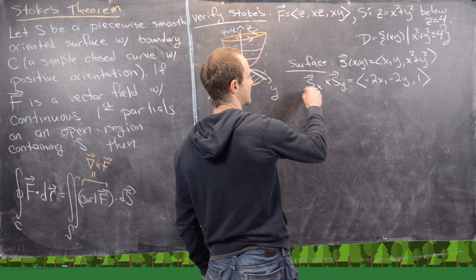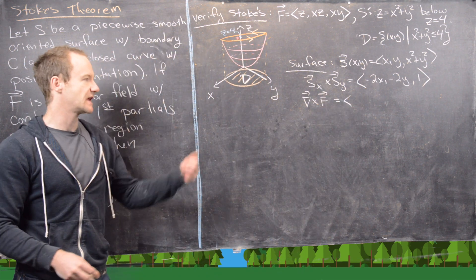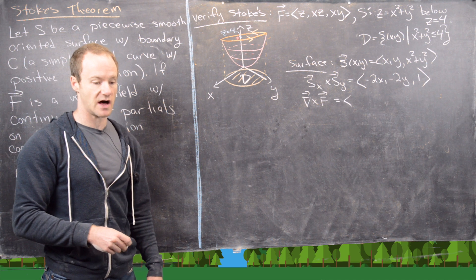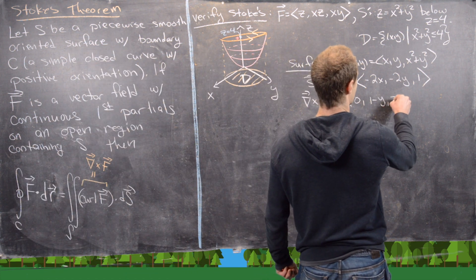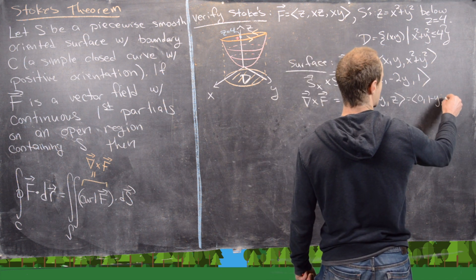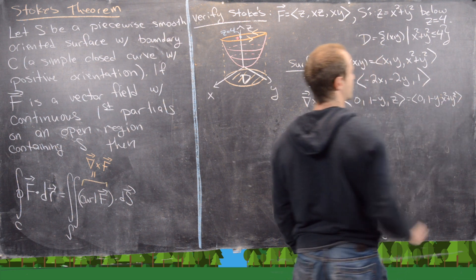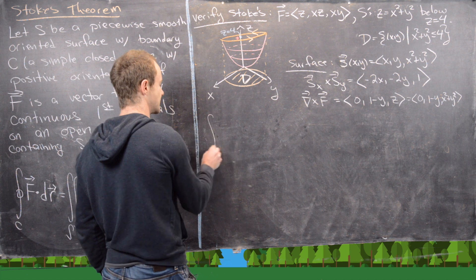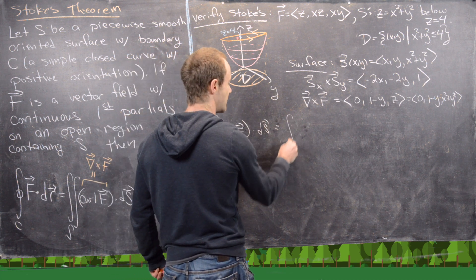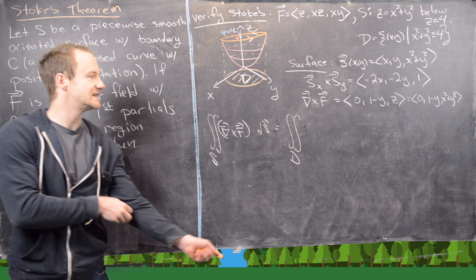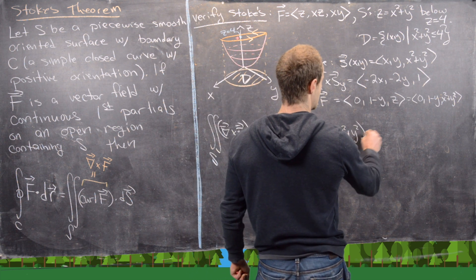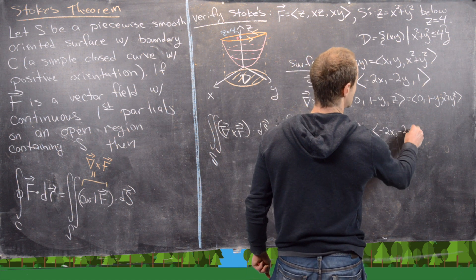Now let's calculate the curl of our vector field. Taking the appropriate partial derivatives gives curl F = (0, 1 − Y, Z). Evaluating Z on the surface Z = X² + Y² gives curl F on the surface as (0, 1 − Y, X² + Y²). We can now set up the surface integral of curl F·dS as the double integral over D of (0, 1 − Y, X² + Y²) dotted with (−2X, −2Y, 1) dA.